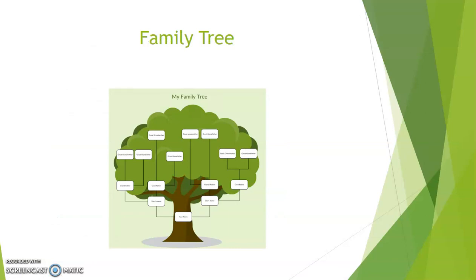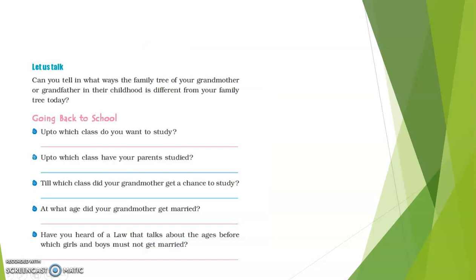This is a sample family tree — you can complete this tree. Can you tell in what ways the family tree of your grandmother or grandfather in their childhood is different from your family tree today? When you talk to your grandparents, you will see that they were living in a joint family — they used to live with their uncles, aunts, and their children. The family used to be very big. Now when we look at our own families, it will be father, mother, and children. Probably some of you will have grandparents living with you. The size of the family and number of children has come down.